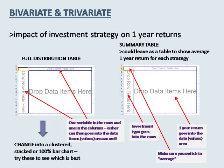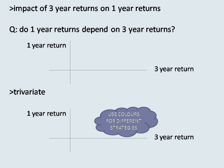For the impact of three year returns on one year returns, we have two numerical variables and so we should think about using a scatter plot to visualize. Also have a think about what measures are useful for this kind of bivariate data. Think about what trends you see, describe them, and discuss whether the trend is expected or not and why, then conclude about the impact on the one year returns.